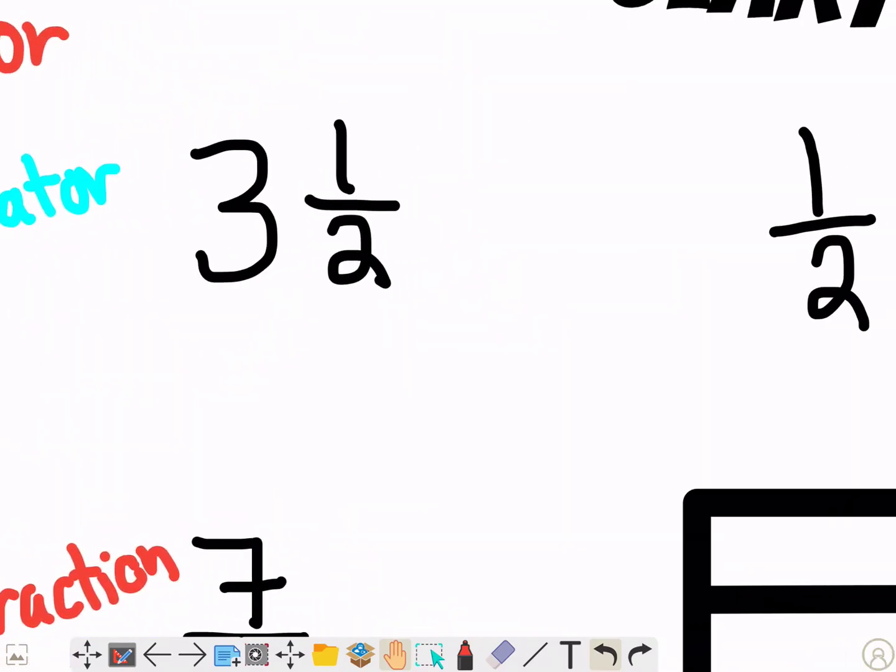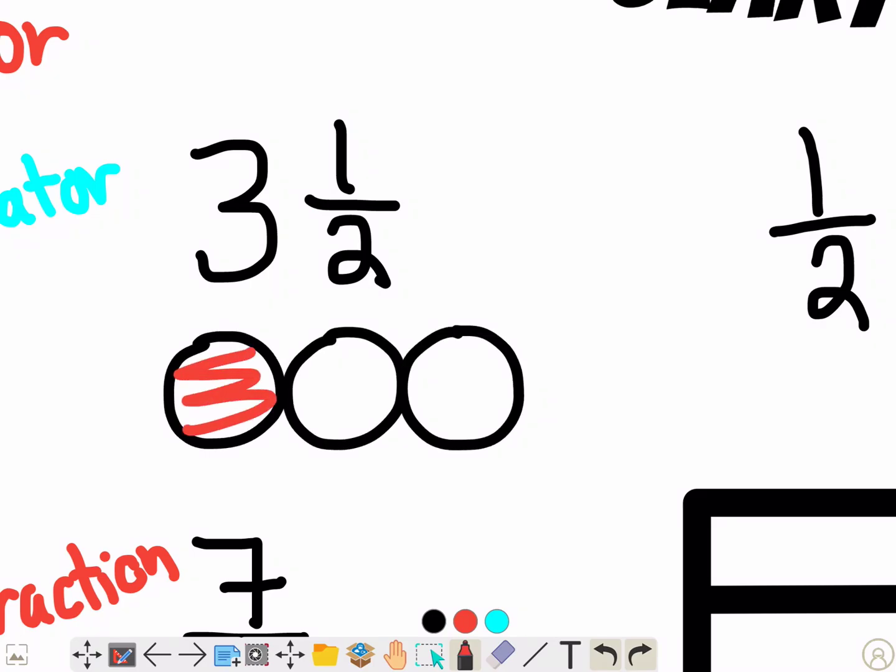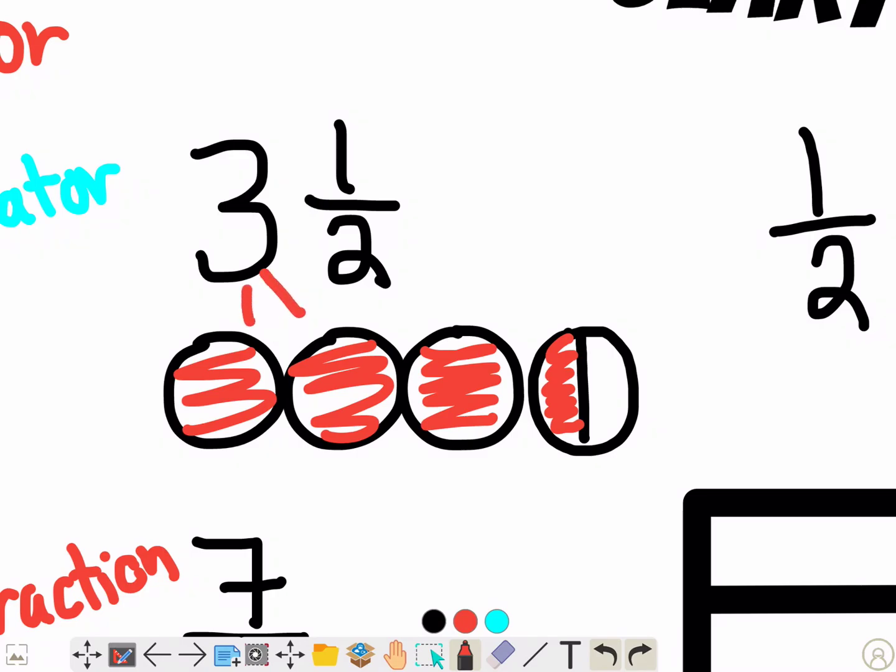The next thing is called a mixed number. This is whenever you have a whole number right here and a fraction put together. So this is saying I had three whole pizzas. I can draw three whole pizzas. One, two, three and I ate all of them. And then I ordered another pizza and I only ate half of it. So I have my three whole, those are right here. And then I have my half that you can see over here.